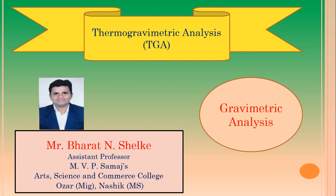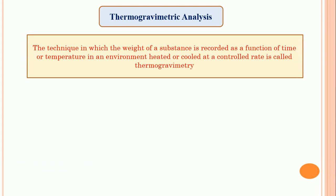Now let's see the definition of thermogravimetric analysis. The technique in which the weight of the substance is recorded as a function of time or temperature in an environment heated or cooled at a controlled rate is called thermogravimetry. That means the weight of the substance is recorded as a function of time or as a function of temperature.